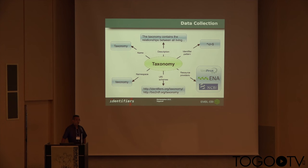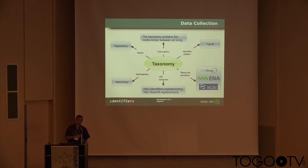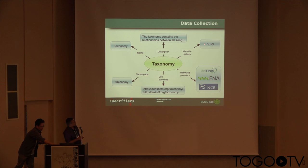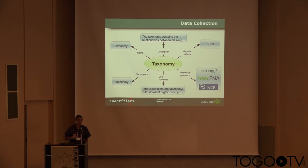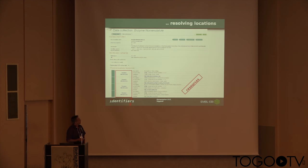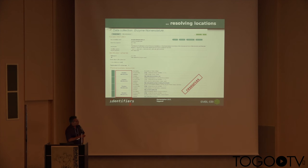Besides that basic information of namespace, collection name, and description, we store a lot of other information as well. On the bottom there, you can see we collect together all the URIs that we know of associated with that data collection — all the places where you can resolve to get information — and an identifier pattern, which describes the format of the identifier used by the data provider. One thing people get confused about: we don't actually store all the data itself. We store information about UniProt and how to access their information. There are also tags associated with each data collection, and we have a separate identifier for each of the resolving locations, which we call resources.